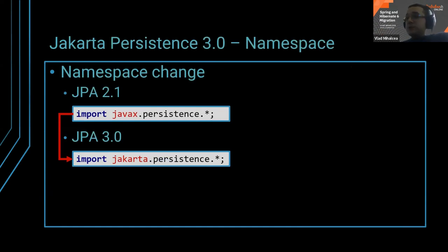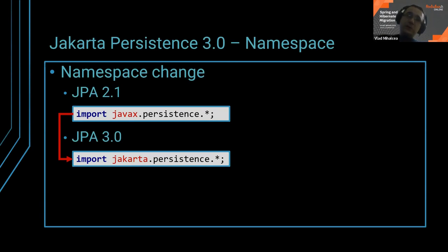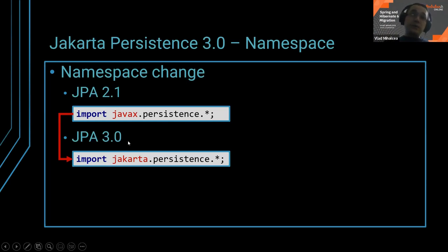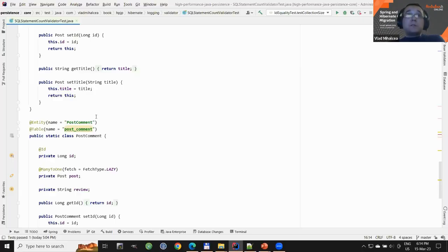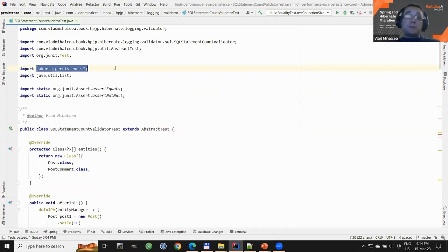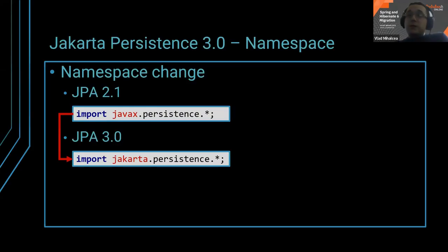The bulk of what's going to impact you both directly and indirectly is the fact that Spring 6 uses Hibernate 6, which has migrated to Jakarta Persistence. Previously we had Java EE, which was an umbrella of specifications including the Java Persistence API. Nowadays it's called Jakarta Persistence and the namespace has changed — instead of javax.persistence, you now have to use jakarta.persistence. This is your direct change in your code. For instance, in this project I have jakarta.persistence as you can see here — otherwise it would not work.